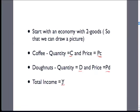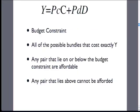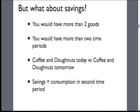The budget constraint is a map of the bundles we can afford. We define it as the price of coffee times the number of cups plus the price of donuts times the donuts bought equals income. This is a line defining all the different combinations of donuts and coffee we can afford. Any combination above the line we can't afford; any combination below the line means we'd have change left over. For today we'll assume we spend all income — in a more complicated world you'd have savings, or think of coffee and donuts today versus tomorrow.